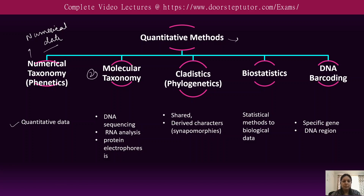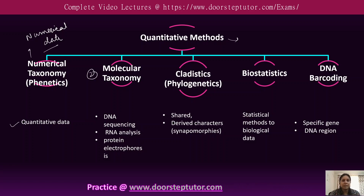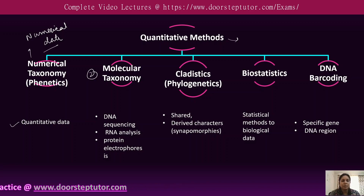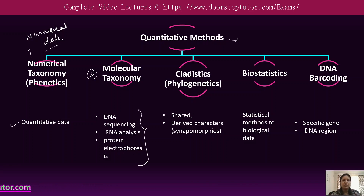The second approach is molecular taxonomy, which uses various sequencing methods like DNA sequencing, RNA analysis, and protein electrophoresis. These three techniques are used to give the genetic mapping of a particular organism, and on the basis of that, organisms are classified according to their relatedness.